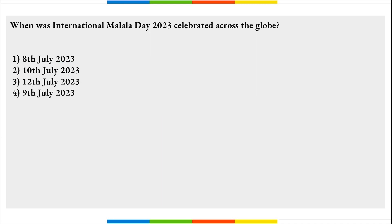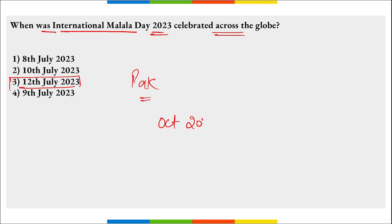When was International Malala Day 2023 observed? On 12th of July, International Malala Day was observed to honor the birthday of Malala Yousafzai, a Pakistani education activist and Nobel Prize laureate. She was honored with the Nobel Prize in October 2014 and was named the youngest ever Nobel Prize winner at age 17.